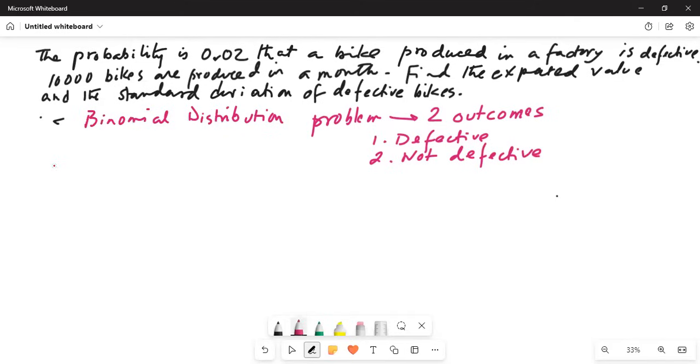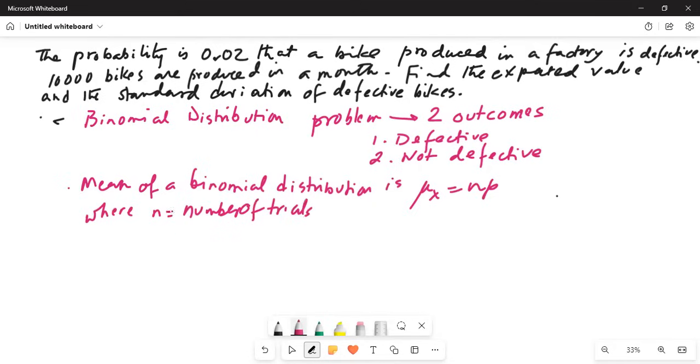The mean of a binomial distribution is μ_x is equal to n times p, where n is equal to number of trials and p is equal to probability of success.